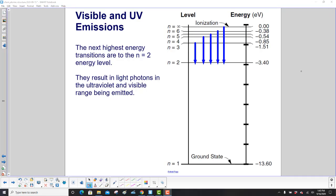The next highest energy transitions are to the n equal 2 level. So you can go from n equal 3 to n equal 2, n equal 4 to n equal 2, and so forth. And hopefully you can see those are smaller energy transitions. The arrows are smaller, smaller changes in energy. They result in light photons in both the ultraviolet and the visible range being emitted.